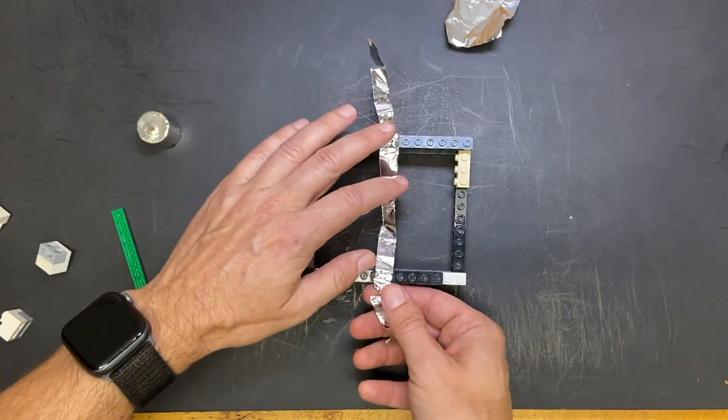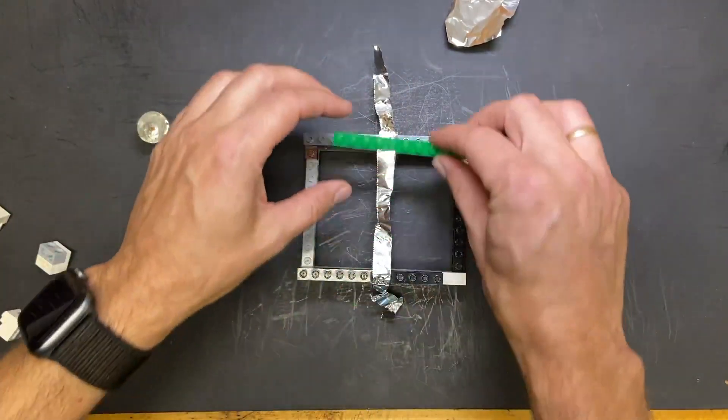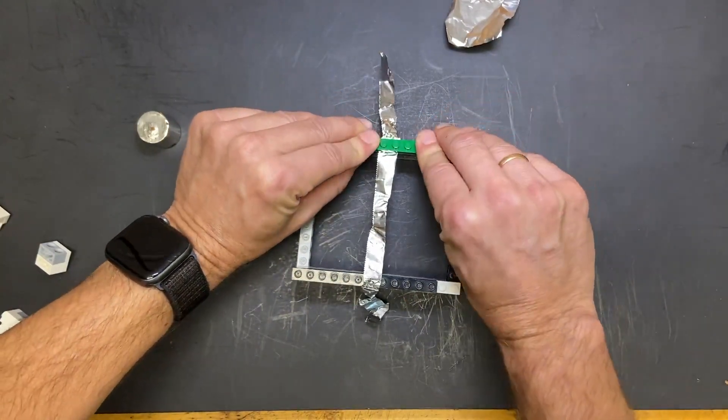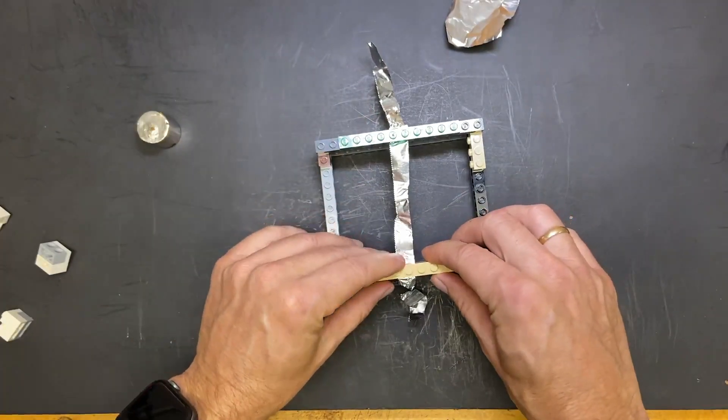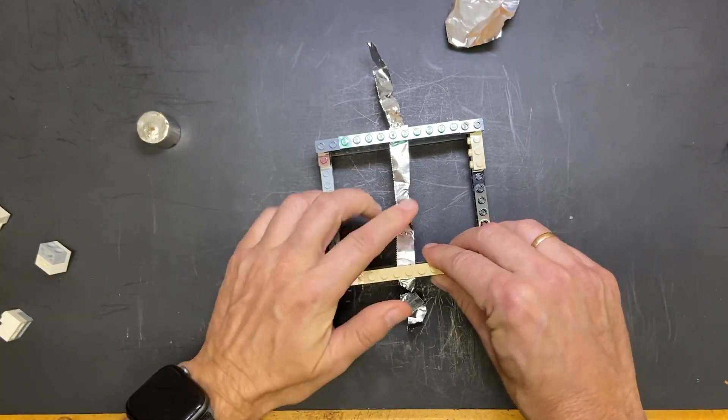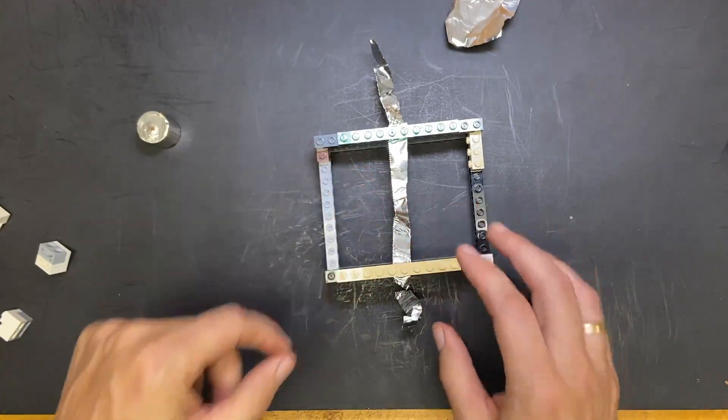And then what I'm going to do is I'm going to use this. I built a little Lego stand and I cut out a piece of aluminum foil. This is going to be my ribbon. So I'm going to put this right here and then I'm going to use some Lego pieces to hold it down. This actually works pretty well.